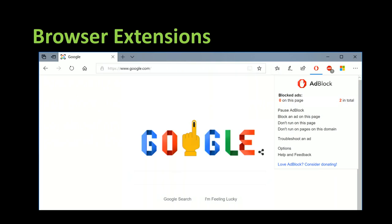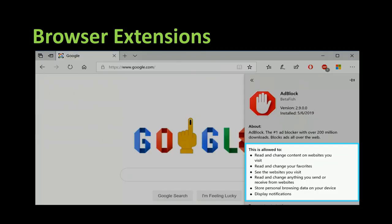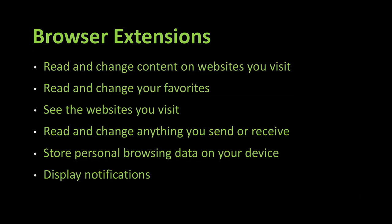Here's how a simple AdBlock Plus extension looks on Microsoft Edge, which is pretty much doing its job. Have you ever tried to figure out what this extension is capable of doing in your browser? If you look at the settings, there are a couple of permissions. A simple AdBlock Plus extension can read and change content on websites you visit, read and change your favorites, see the websites you visit, read and change anything you send or receive, store personal browsing data, and display notifications.